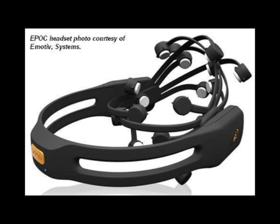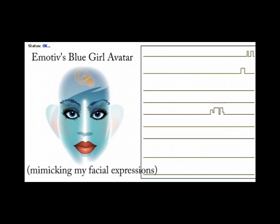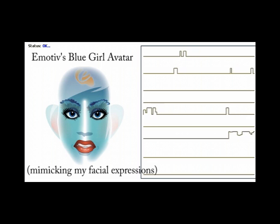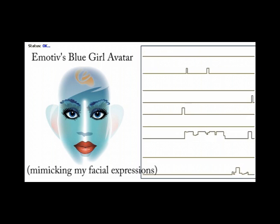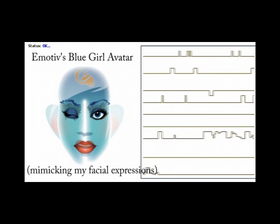This is the Emotive Epoch headset, a consumer-priced 14-electrode EEG headset that connects wirelessly to your computer. The Epoch headset has many talents, and one of them is the ability to read your facial expression and because of this, it can detect strong emotions. This opens the door to a far more powerful way to interact with your computer where your emotions merge with the digital world, allowing the computer to react to what you are feeling and allowing you to affect the computer with your emotions.